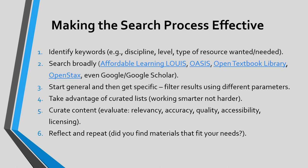Number three: start general and then get specific — filter results using different parameters. Number four: take advantage of curated lists; work smarter, not harder. Number five: curate content — evaluate what you found in terms of relevancy, accuracy, quality, accessibility, and licensing. Number six: reflect and repeat. Did you find materials that fit your needs?